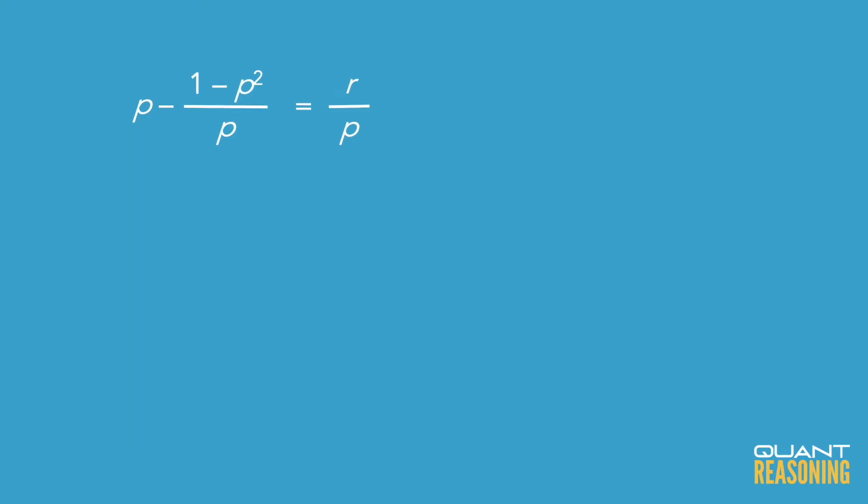So it might be a good idea to multiply both sides of the equation by p. On the left hand side of the equation, the p on its own would turn into p squared, right? p times p is p squared.